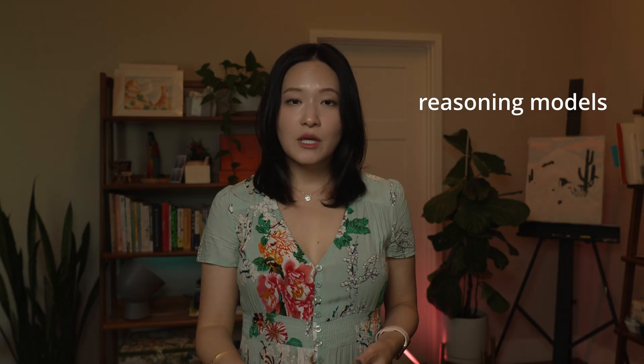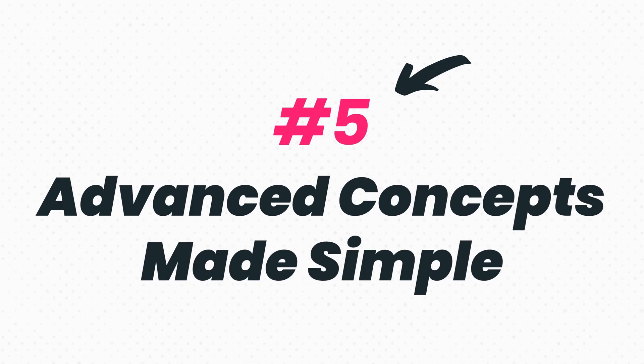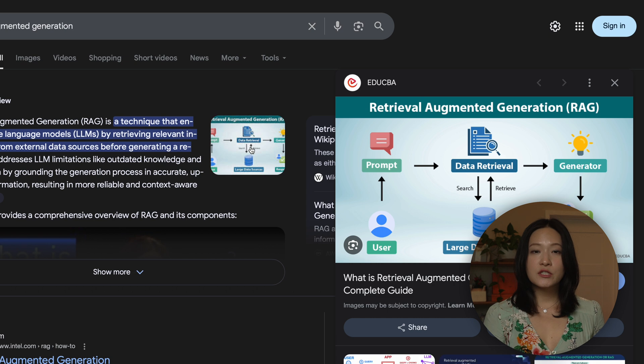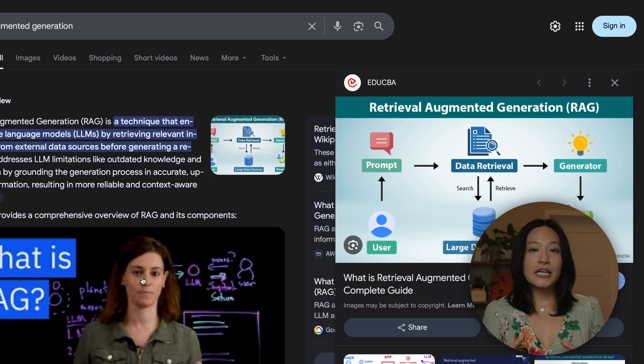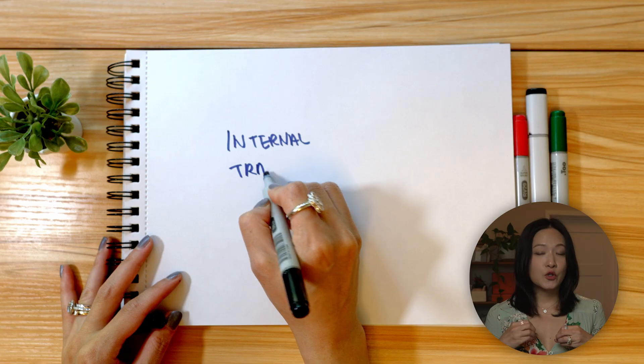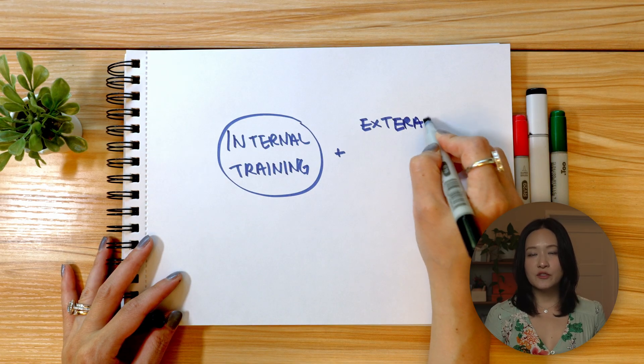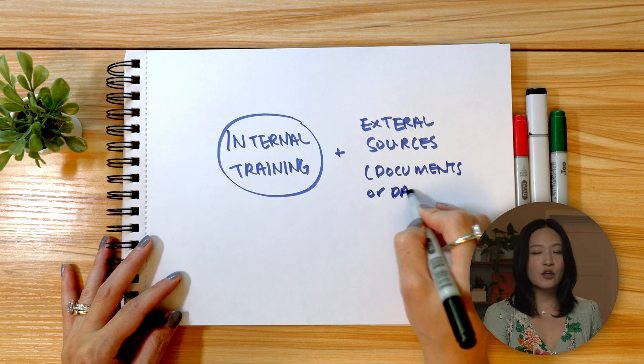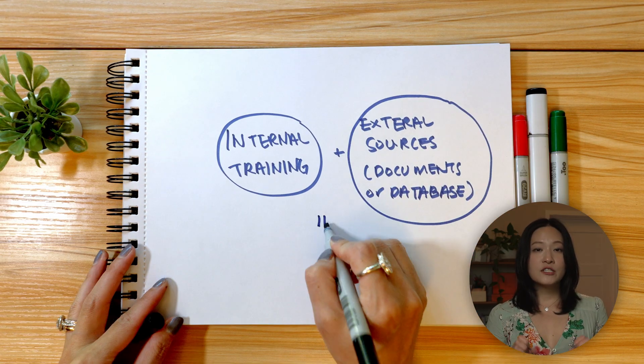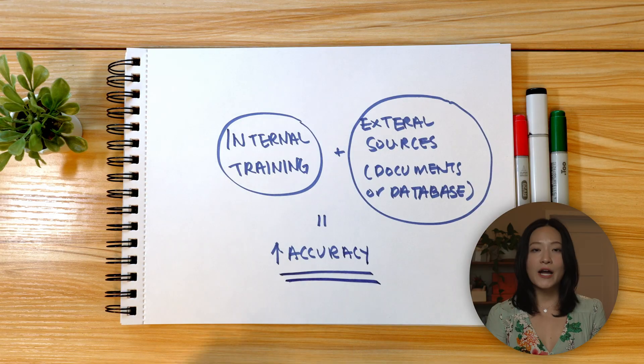These agents are powered by specialized large language models called reasoning models — models trained to solve problems step by step, kind of like showing your work in math class. When you see a chatbot pause and say it's thinking, that's the reasoning model working through the problem internally before giving you an answer. There are also two other concepts worth knowing. First is RAG, Retrieval Augmented Generation, a technique that helps AI models avoid making things up. Instead of just relying on its internal training, the AI will first pull specific information from other sources like a document or a database, then uses that fresh context to give you a more specific and accurate answer.